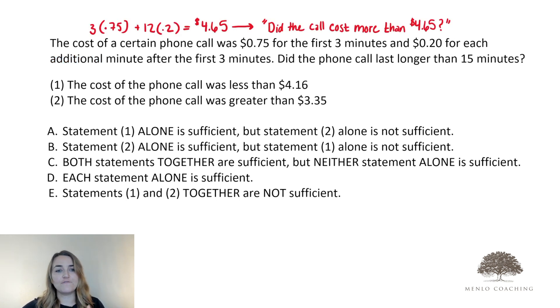Three times 0.75 plus 12 times 0.2 getting us to $4.65 or the reframed question stem, did the call cost more than $4.65? But did you see what they might've missed here?